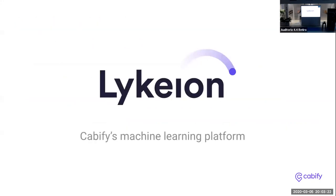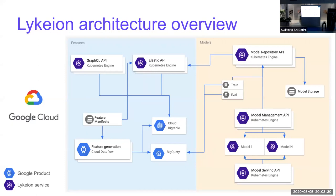We even have a name for the platform. So let's see a general overview. Our infrastructure lives in Google Cloud, so we use a lot of Google products. For instance, BigQuery, Google Cloud Dataflow, Composer (which is the managed version of Airflow), and Kubernetes Engine where all our services run.